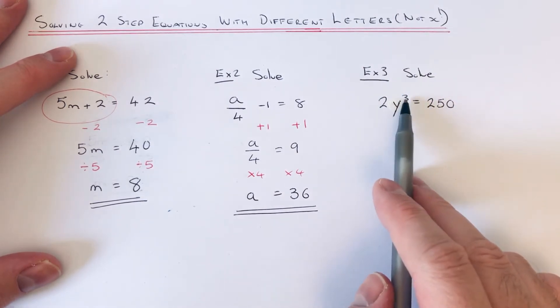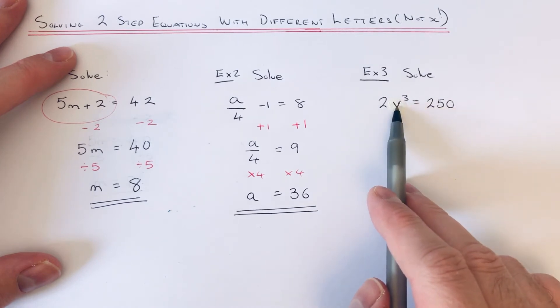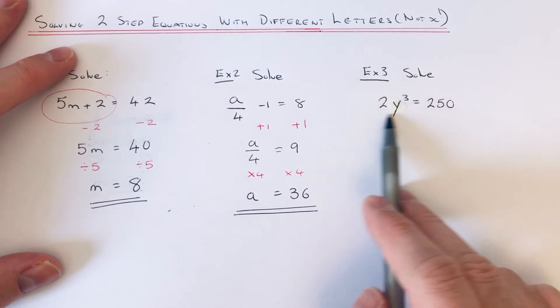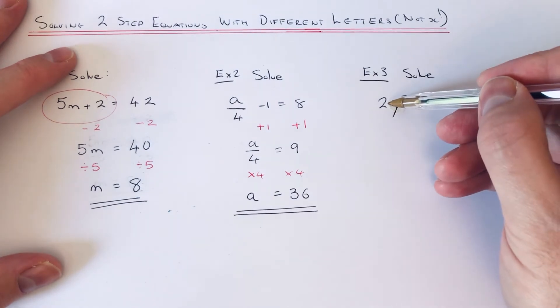So we've got to solve 2y cubed equals 250. So this time we're after the letter y. Okay, so if we look on the left-hand side, what is happening to our letter y? First of all, it's being cubed and then we're multiplying it by 2.